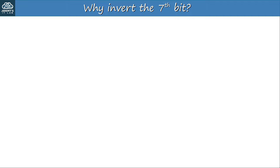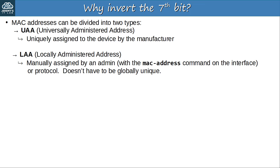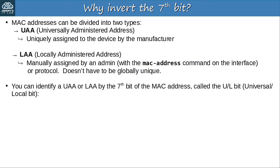Let me briefly explain why the 7th bit is inverted. MAC addresses can be divided into two types: UAAs, universally administered addresses, which are unique MAC addresses assigned by the manufacturer; and LAAs, locally administered addresses, which are manually assigned by an admin or a protocol. In Cisco IOS you can manually configure a MAC address with the MAC address command on an interface — these don't have to be globally unique. You can identify a UAA or LAA by the 7th bit of the MAC address, called the UL bit (universal/local bit). If the UL bit is 0, it's a UAA; if it's 1, it's an LAA.